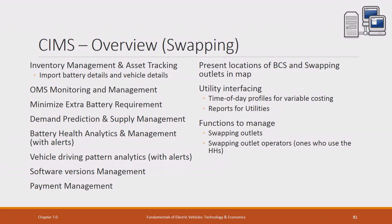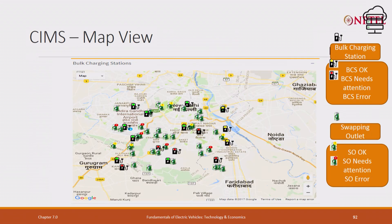The CMS — the central information management system — will manage your inventory management, OMS monitoring, and maximizing extra battery requirement. Remember, if there are 100 vehicles swapping, you could need as many as 200 batteries; if you can optimize it to 130–150, that will be great. Demand prediction and supply: how many batteries will be required at each place? Battery health analytics and measurement, vehicle driving pattern, software version management, payment management, present location of BCS and swapping, utility interface services and functions to manage — all these will make your system work.